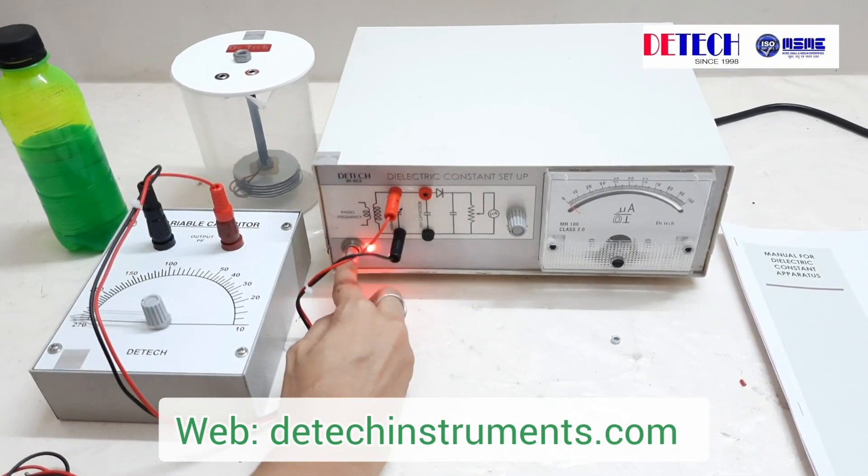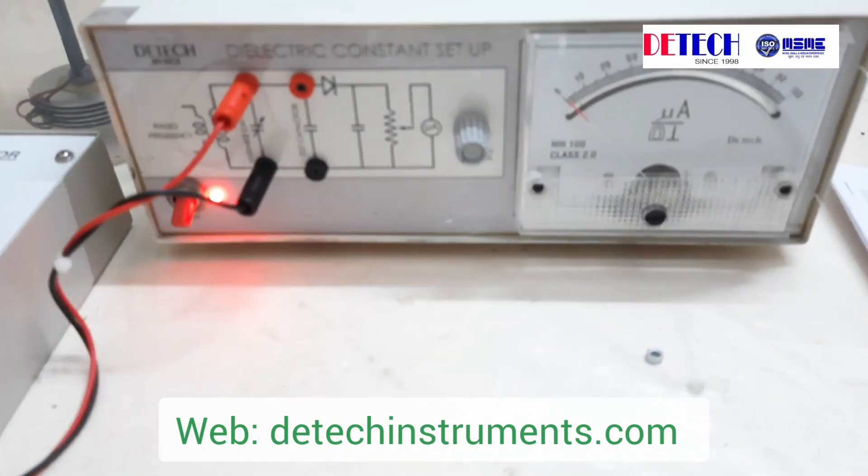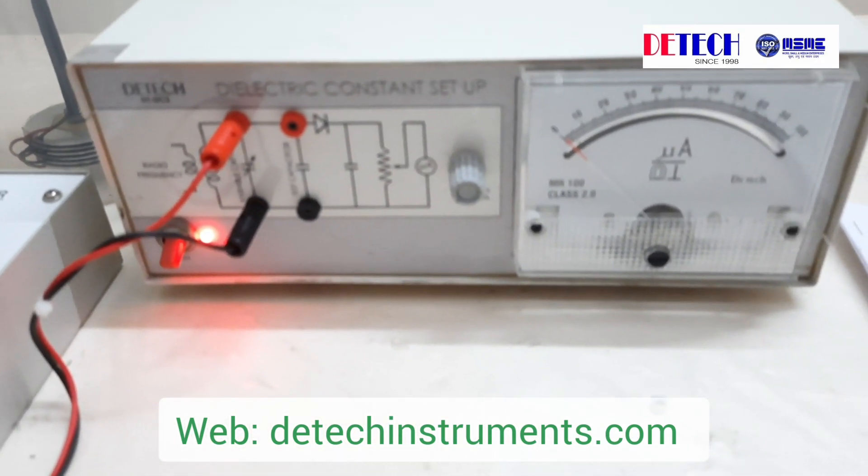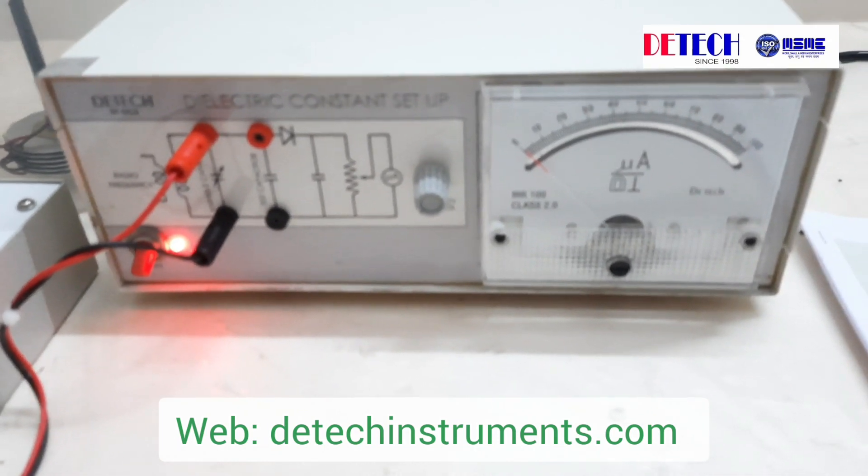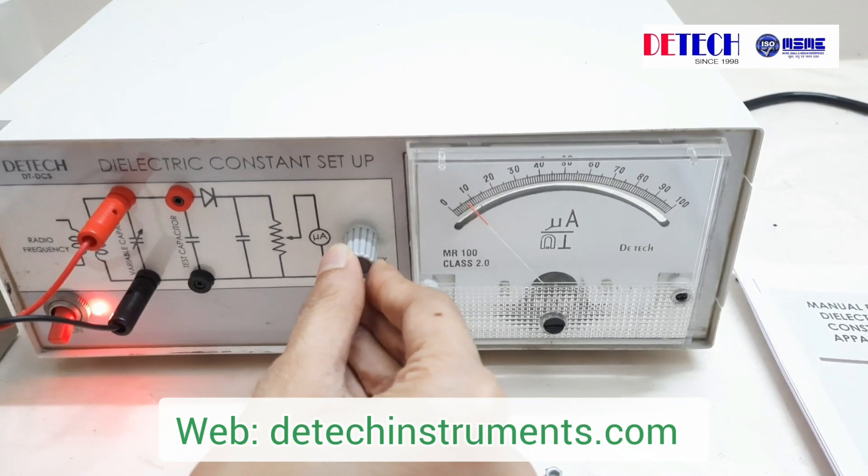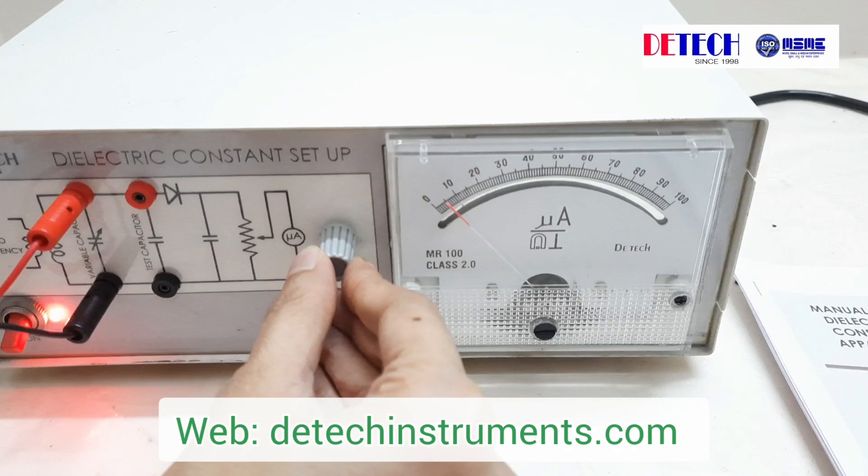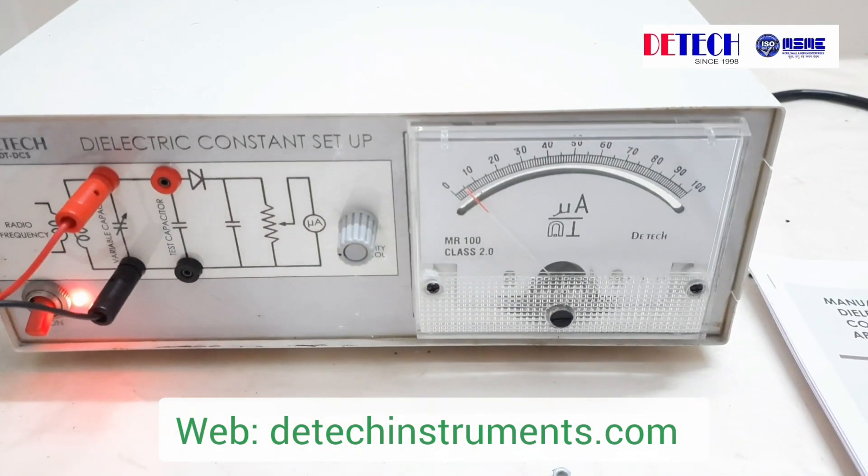Let us switch on the unit. Let's set the sensitivity to around 5 microampere. Once you set the sensitivity, you cannot change it throughout the experiment. This is mainly used so that we get a good result. It's used to set the range of the ammeter.